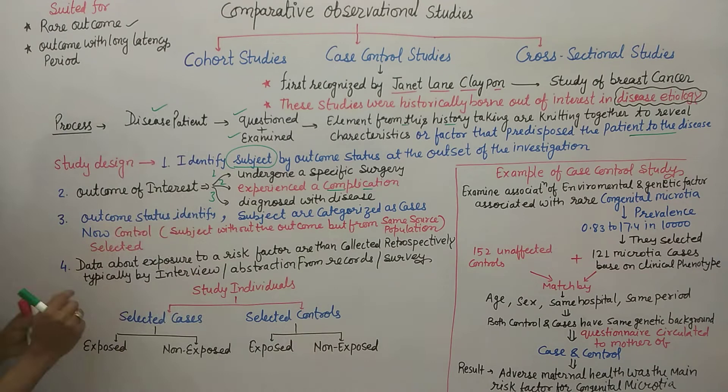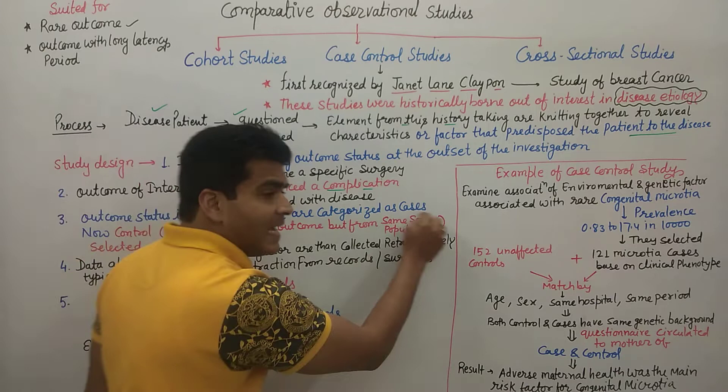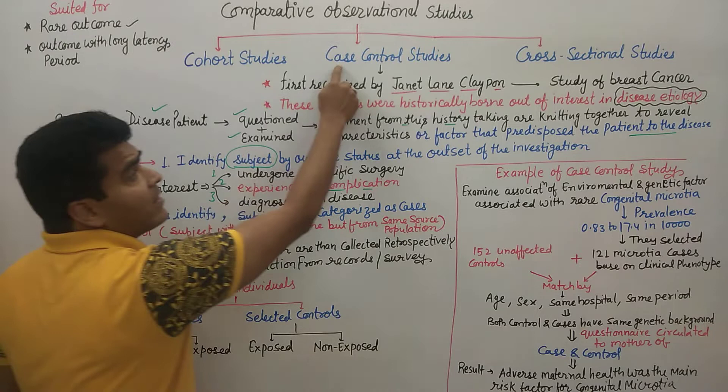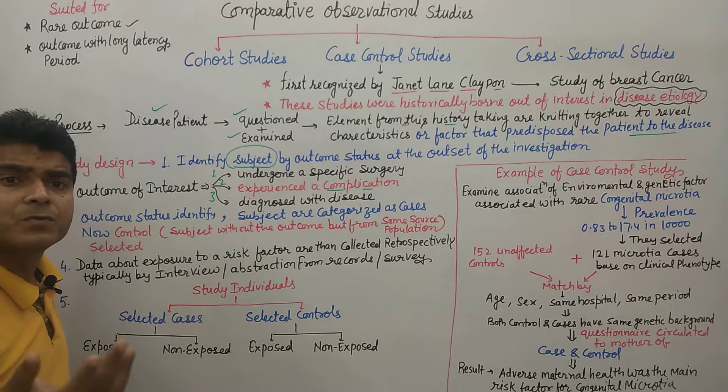So to summarize the process: first, subjects are identified; second, cases are identified; third, controls are identified. After that we proceed to data analysis.